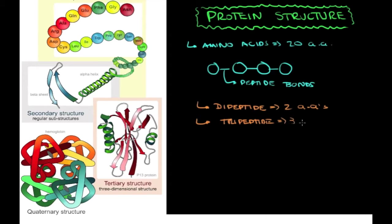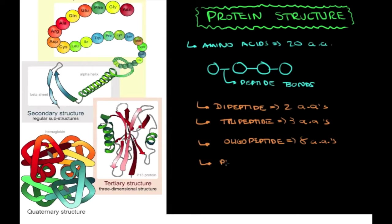A tripeptide is for three amino acids. If you have around eight amino acids, you call it an oligopeptide — that's about eight amino acids. And then if you have more than ten, you start to call it a polypeptide, which is between roughly ten to a hundred amino acids. When you start having more than a hundred amino acids, you call it a protein.